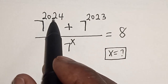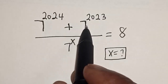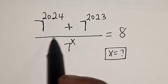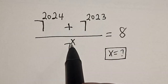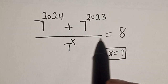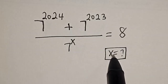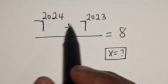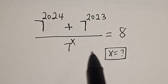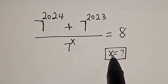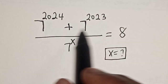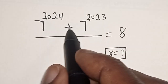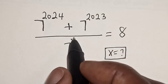7 raised to power 2024 plus 7 raised to power 2023, divided by 7 raised to power x, is equal to 8. What is the value of x? Hi everyone, welcome to my class. In this class we want to find the value of x from this equation. But before we proceed, please don't forget to like, share, comment and subscribe.